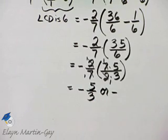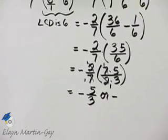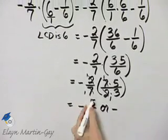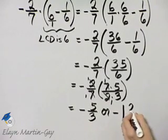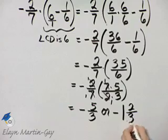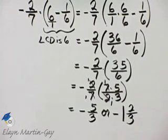Now that's an improper fraction, so if you'd like, we can go ahead and write that as an equivalent mixed number. 3 divides into 5 one time with a remainder of 2 that goes in the numerator, 2/3. So the result is negative 5/3 or negative 1 and 2/3.